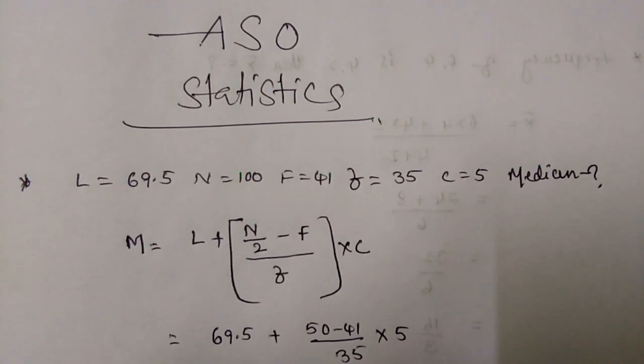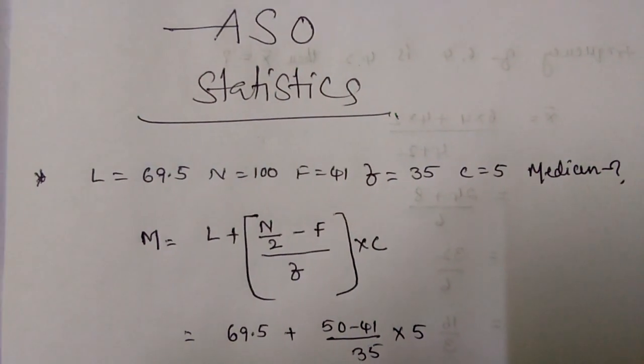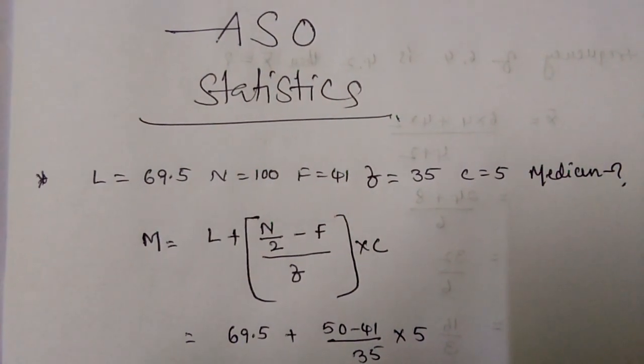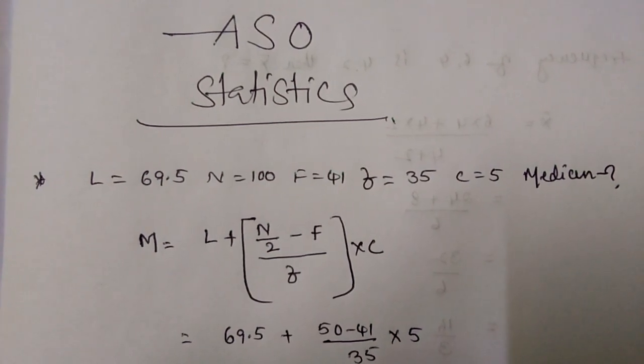And C is the class interval. Then median formula is L plus N by 2 minus capital F, by small f, into C.